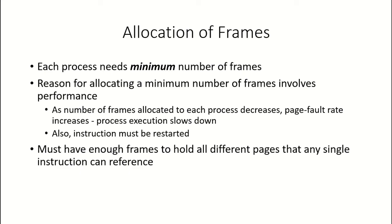We have seen earlier that any process being executed has its pages brought into the main memory and put in memory frames. But each process needs a minimum number of frames. The reason for allocating this minimum number is performance — if the number of frames allocated to each process decreases, then the page fault rate will increase and process execution will slow down. This is how performance gets degraded.